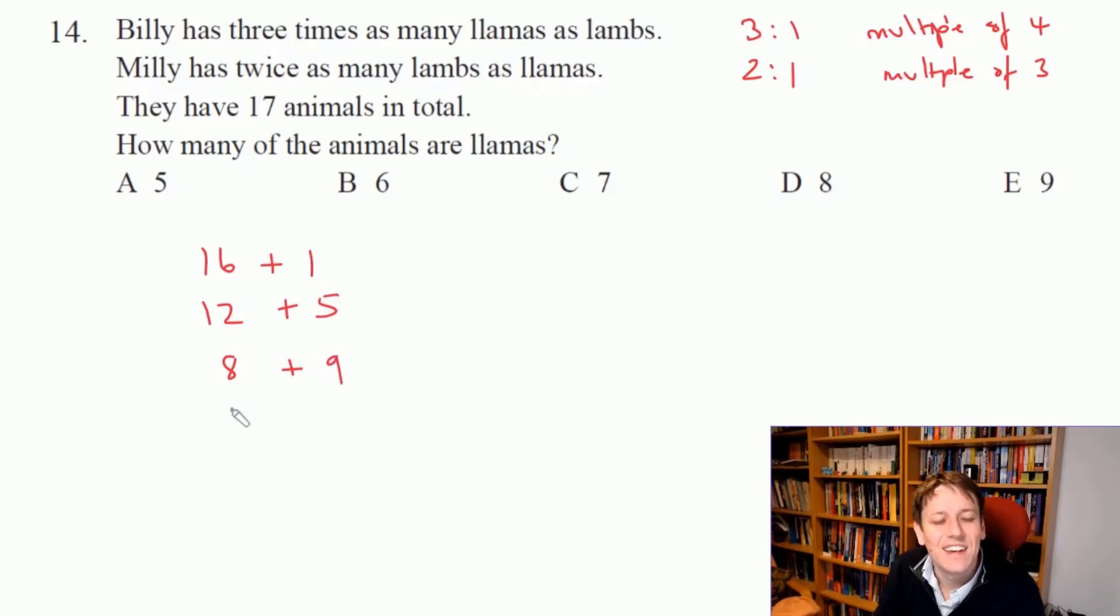These are the multiples of 4 and what you need to add to them to make 17. The only way you can do that with a multiple of 3 is 8 and 9, so it must be that Billy's got 6 to 2 and Milly has 9.